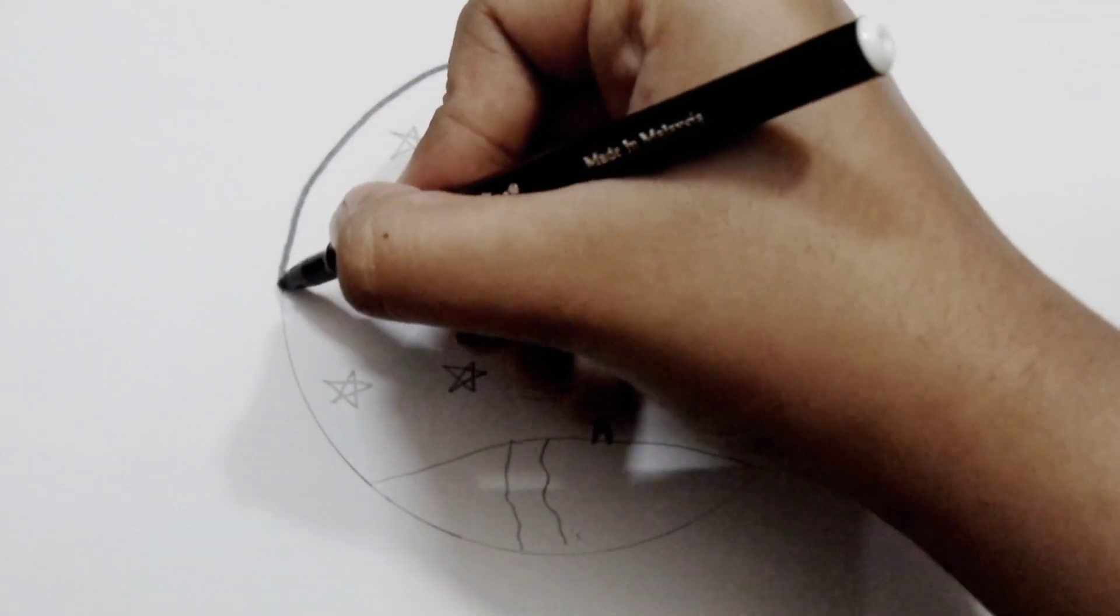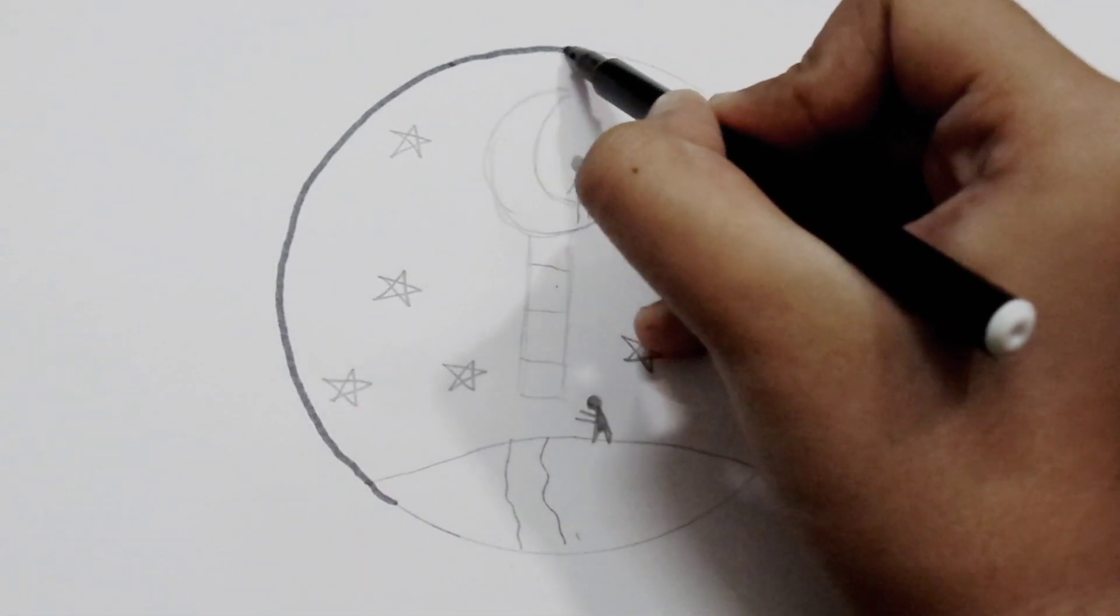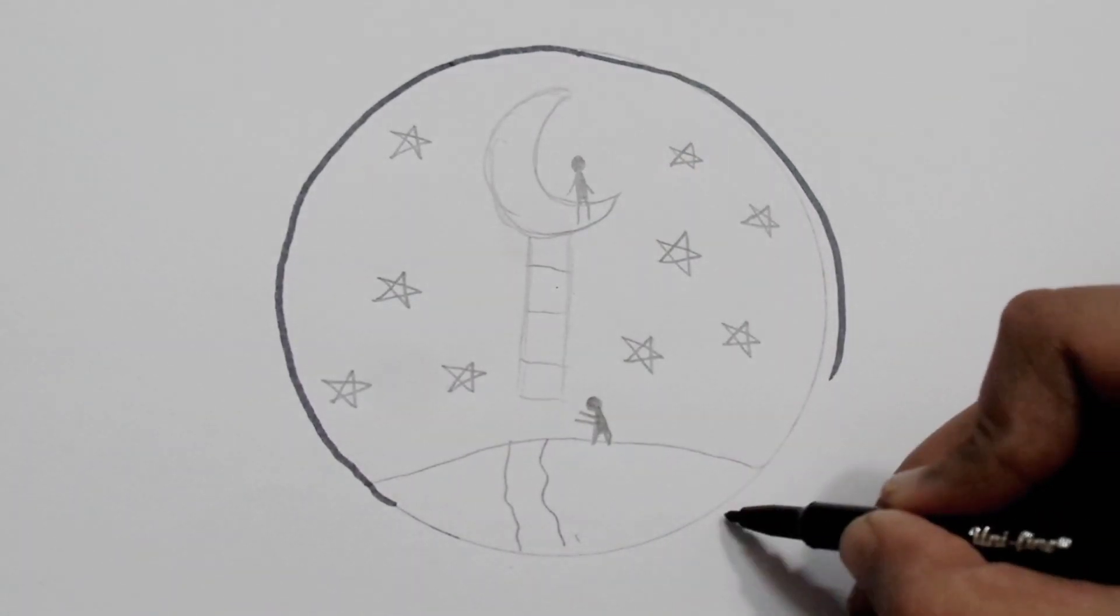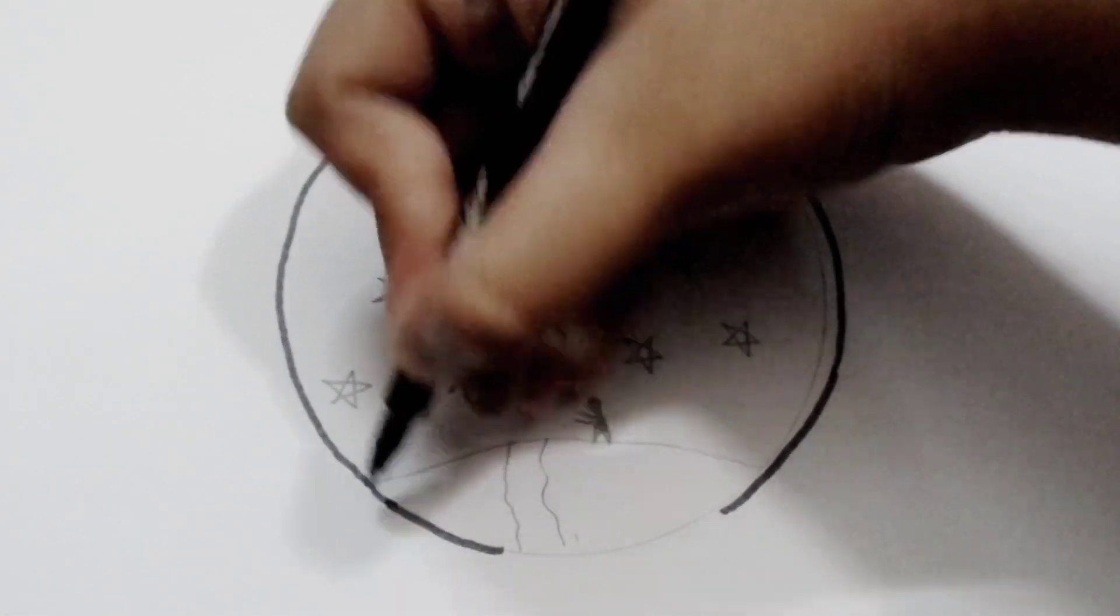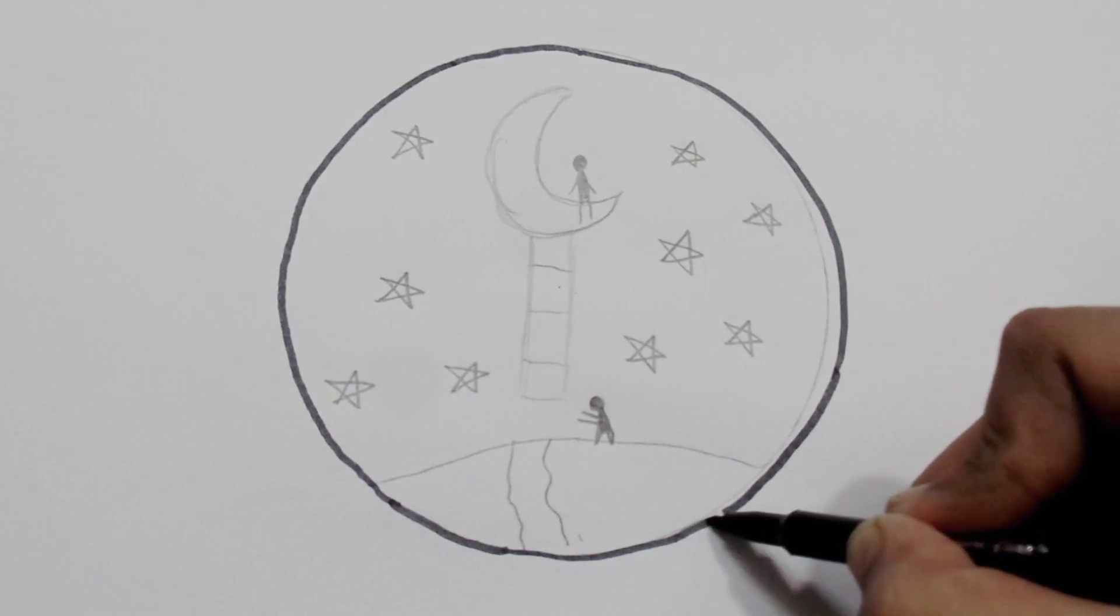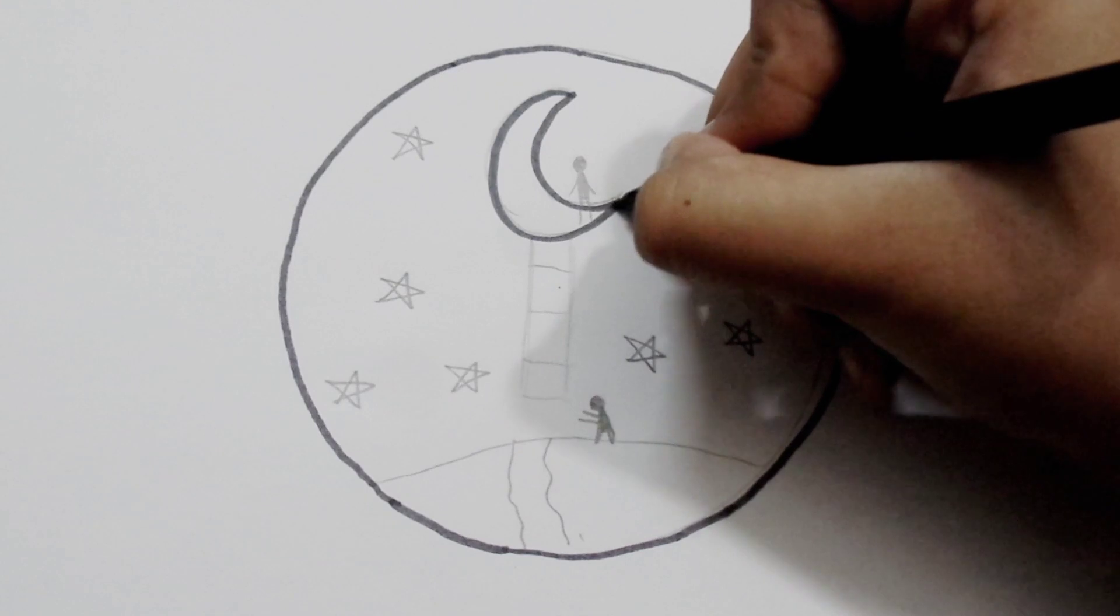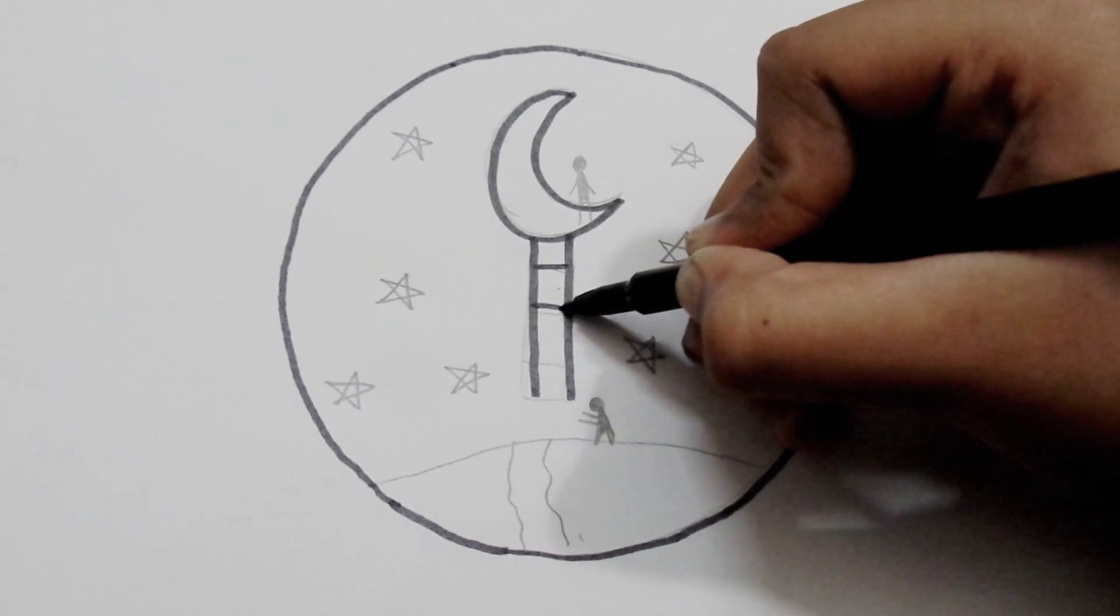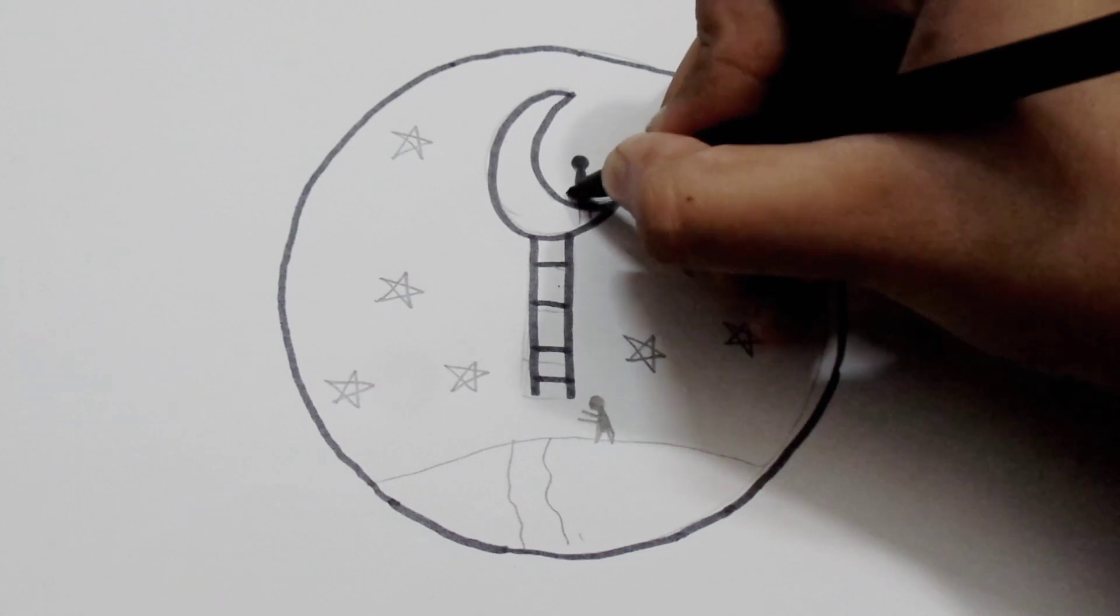Then we are going to border it. We will border the moon and the ladder and the person.